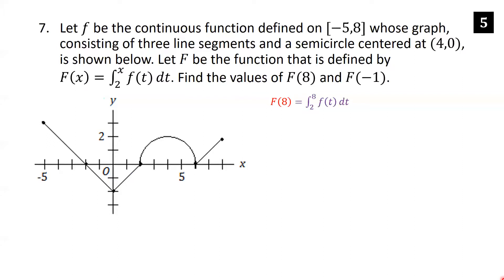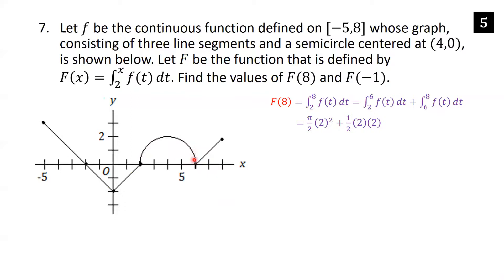F(8) equals the integral from 2 to 8 of f(t) dt. We split this into the integral from 2 to 6 under the semicircle, plus the integral from 6 to 8 under the triangle. The semicircle has radius 2, so its area is π·2² / 2 = 2π. The triangle has base 2 and height 2, so its area is one-half times 2 times 2 equals 2. Thus F(8) = 2π + 2.